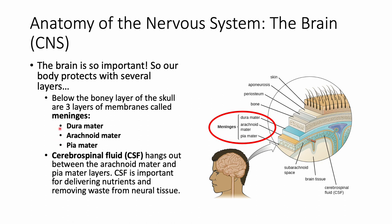Those three layers of membranes protect your brain, and you also have cerebrospinal fluid sitting between your arachnoid mater and pia mater layers of meninges. Cerebrospinal fluid is very important for delivering nutrients and removing waste from neural tissue. You will be asked about the meninges in the diagram, but not about the other parts of the skull.